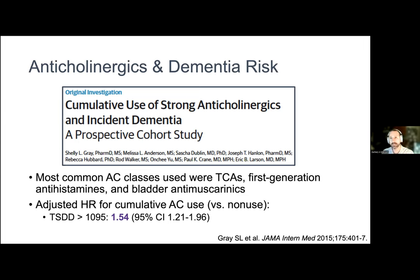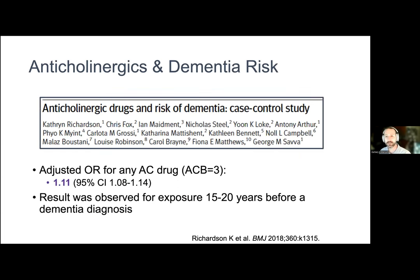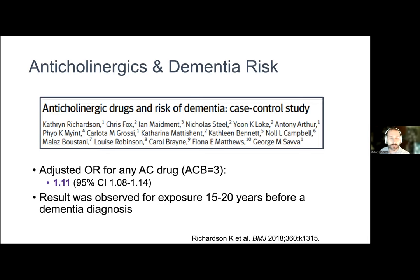To put that into a specific example, that would be something like olanzapine 2.5 milligrams every day for more than three years. Following this important paper, a study from the UK used their national clinical practice research data link, looking at patients who had a new diagnosis of dementia and compared their prescription of anticholinergic drugs before that diagnosis with a matched group of people who did not have dementia—a case-control study. They found findings consistent with the previous study: anticholinergic use was associated with increased odds of dementia, with data going back 15 to 20 years.